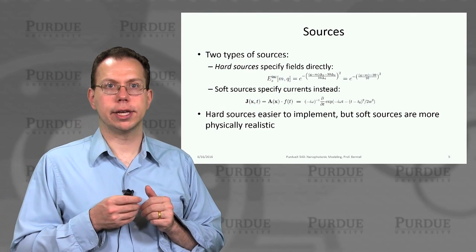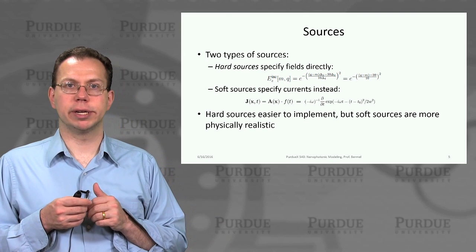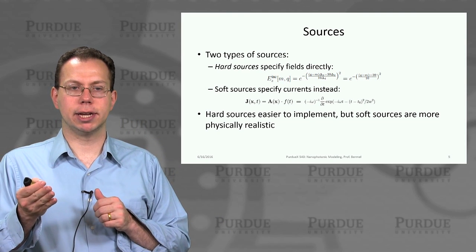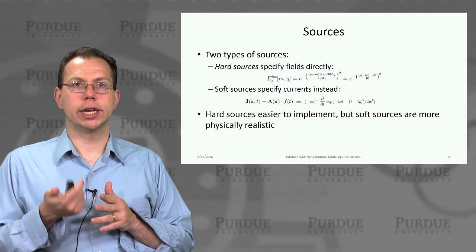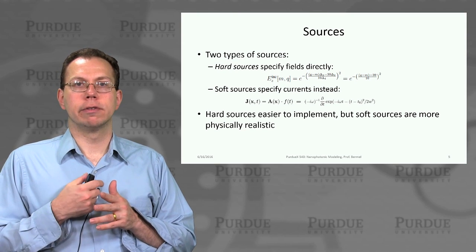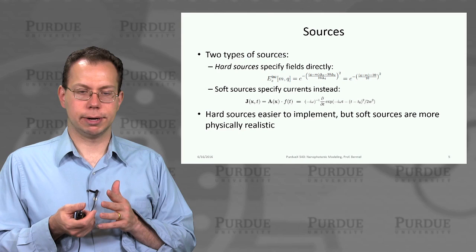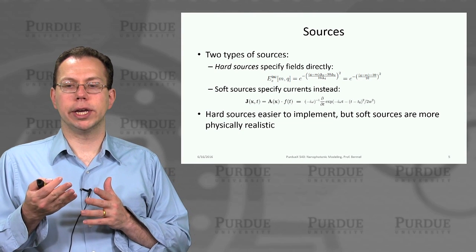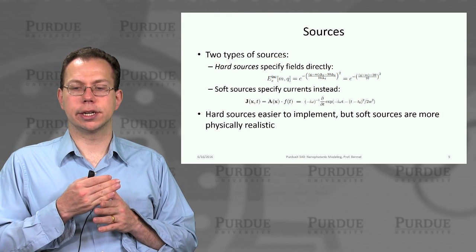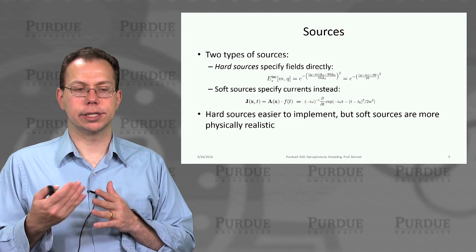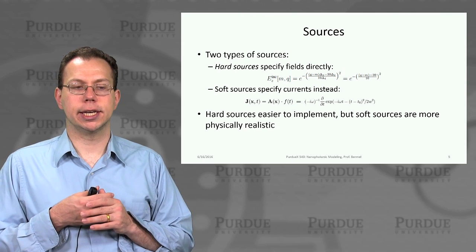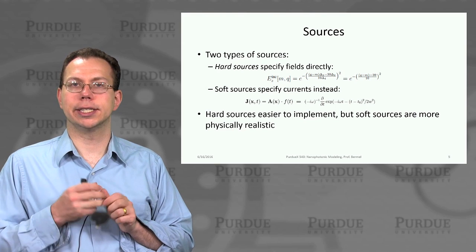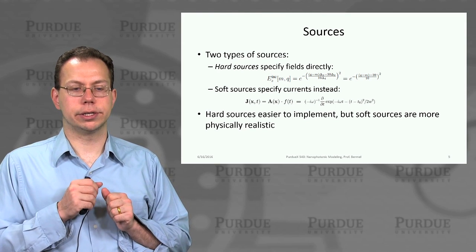Now, there are a few other things that are important for these kind of implementations, besides the basic update equations which form the core of what we're doing. One is we have to have some way for fields to be created in the first place. We can assume that all the initial conditions are zero, but we must have some way to start the fields off. Now, one way that's the most obvious is a so-called hard source, where we would just directly specify the field to follow a certain form.